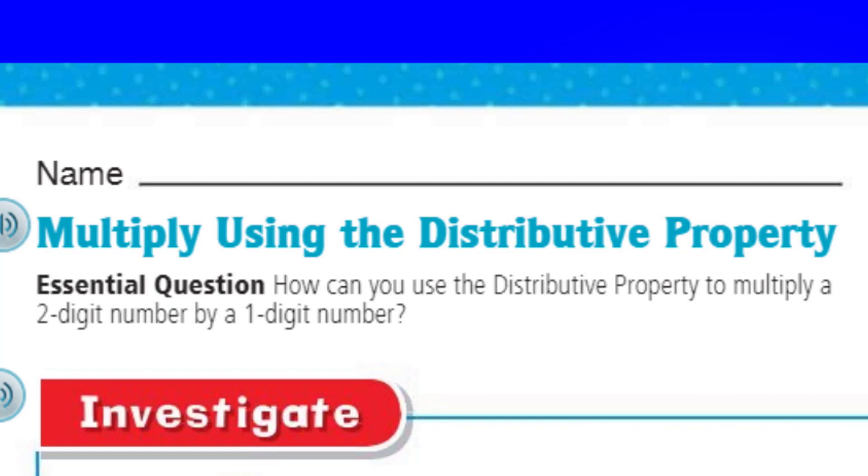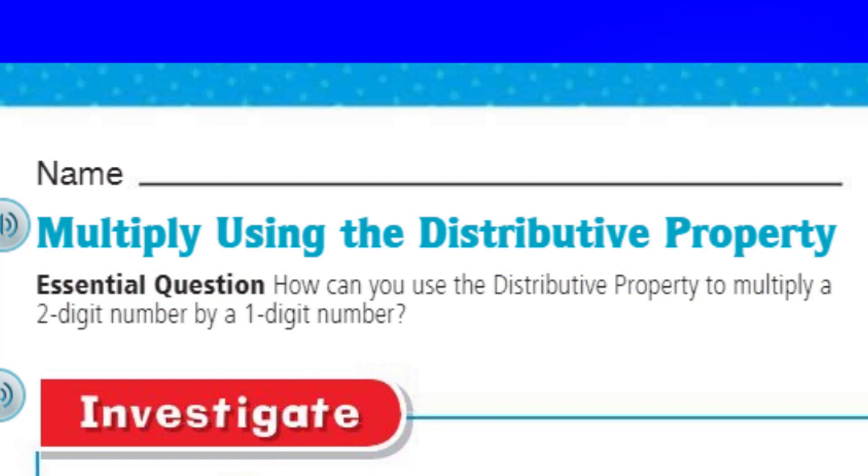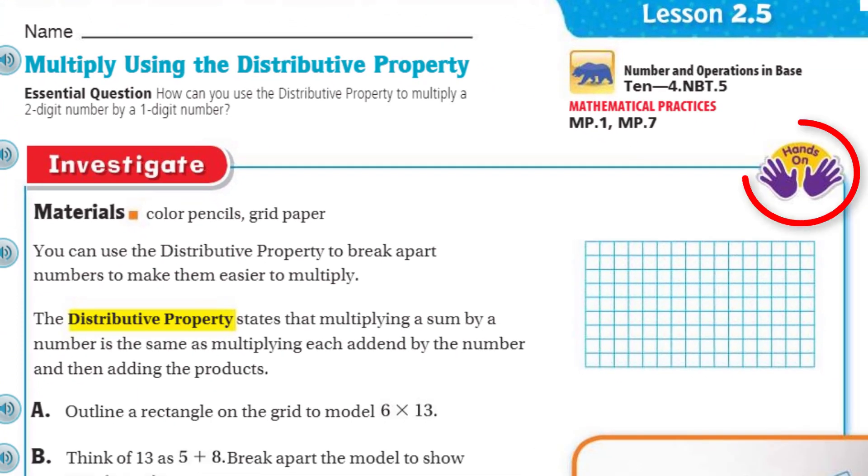What's our purpose, my friends, today? That's our essential question. It says, how can you use the distributive property to multiply a two-digit number by a one-digit number? This is a really important lesson. And look, it's an investigate. That means hands on, my friend. Those little purple hands. Get your hands in there. That's what we're going to be doing.